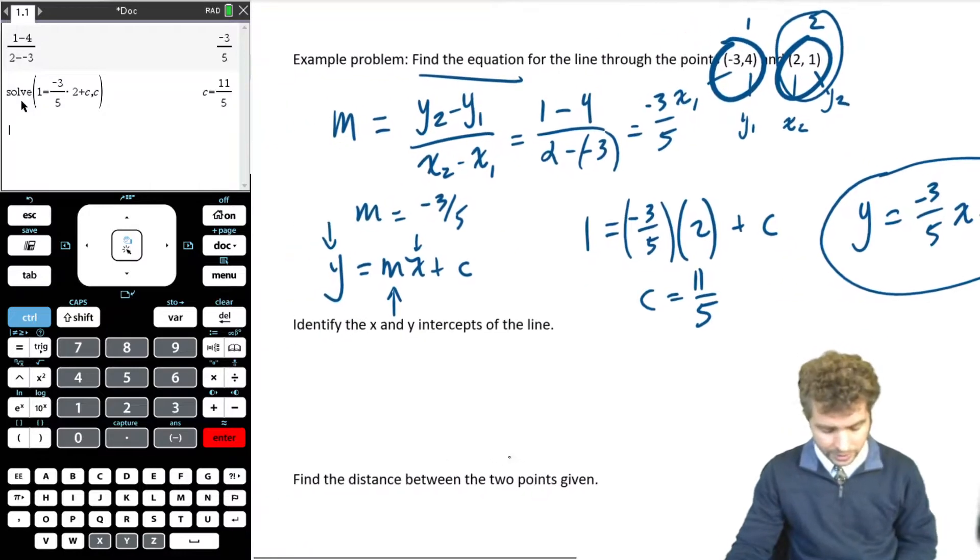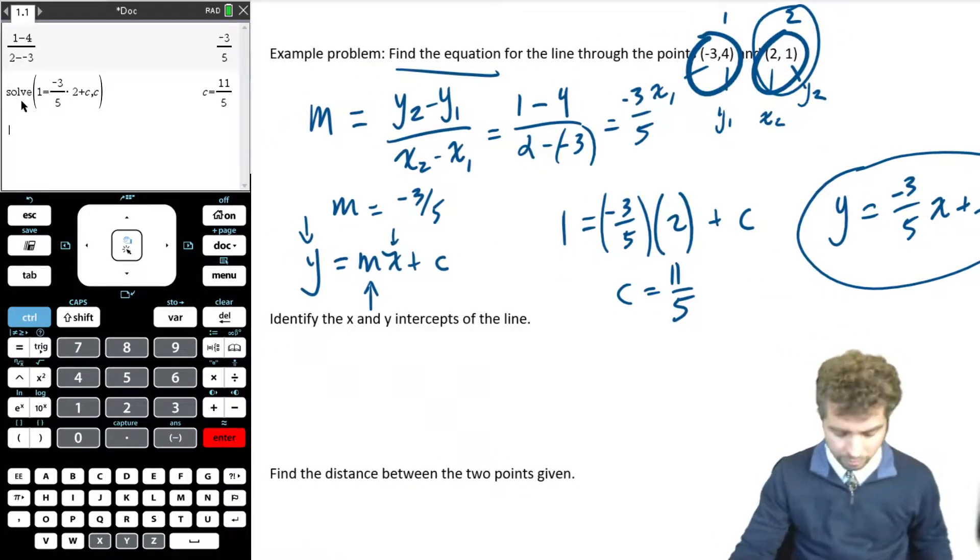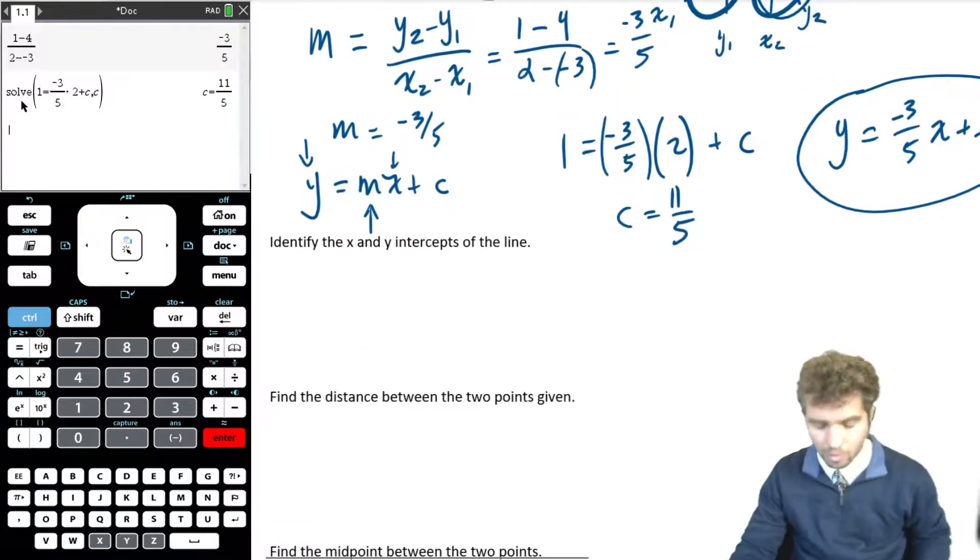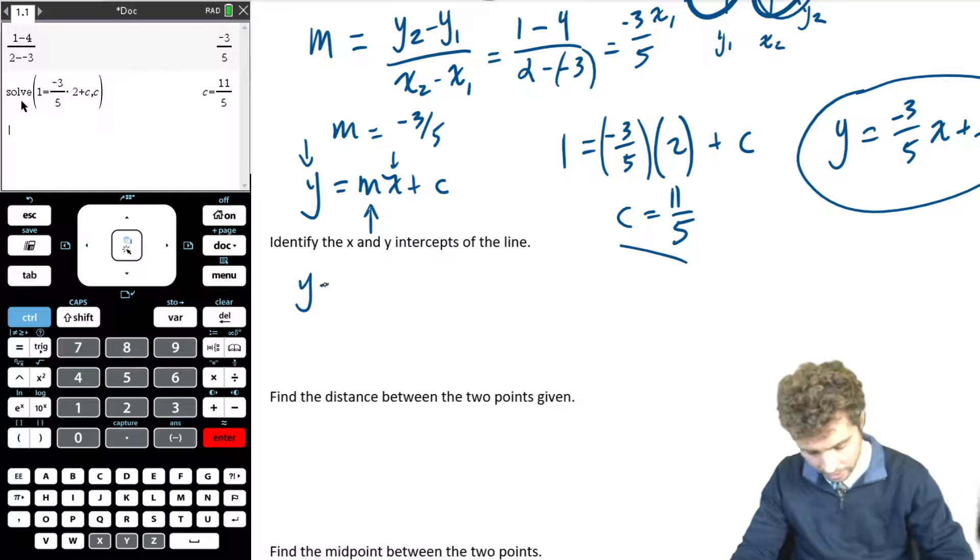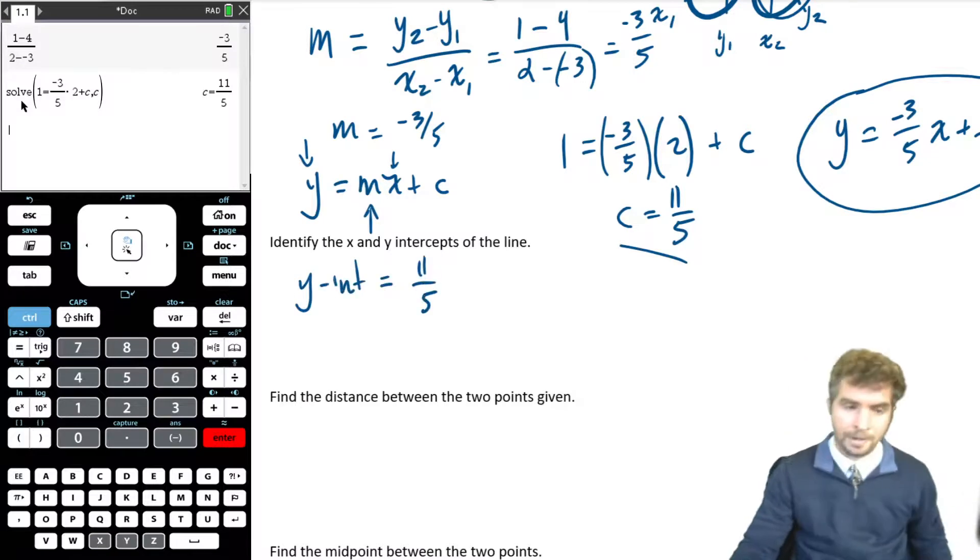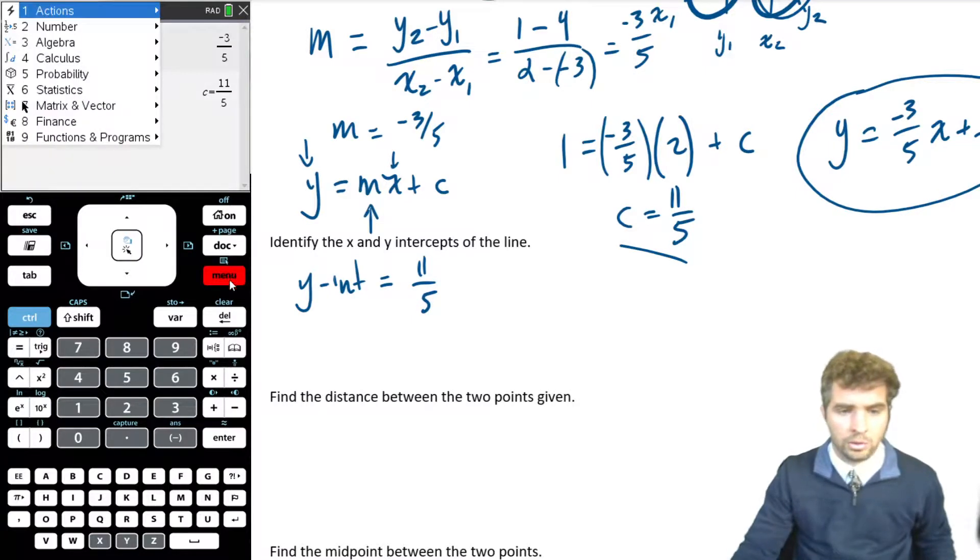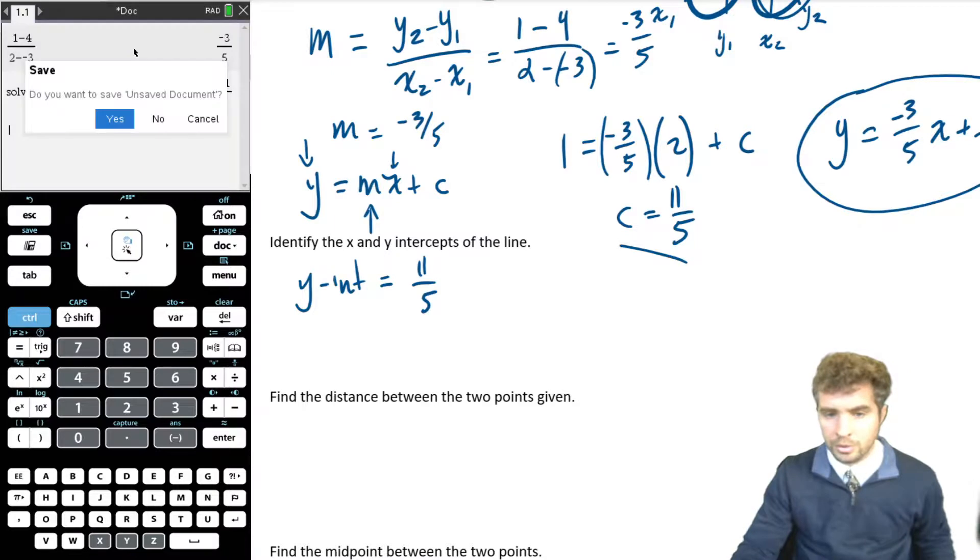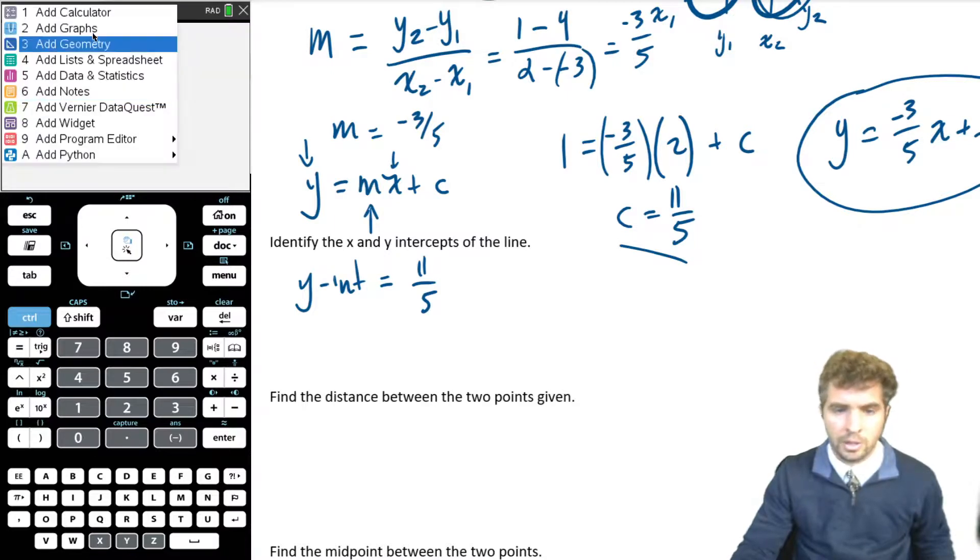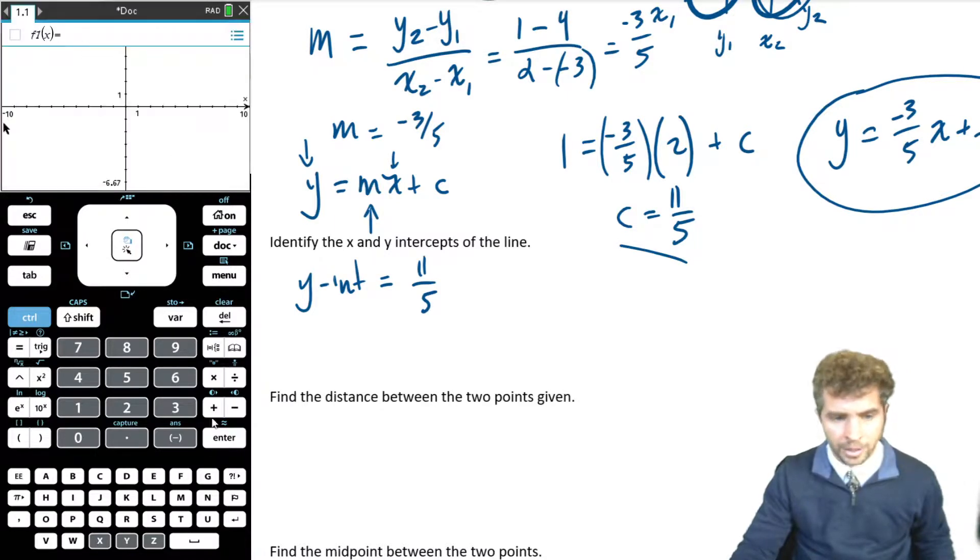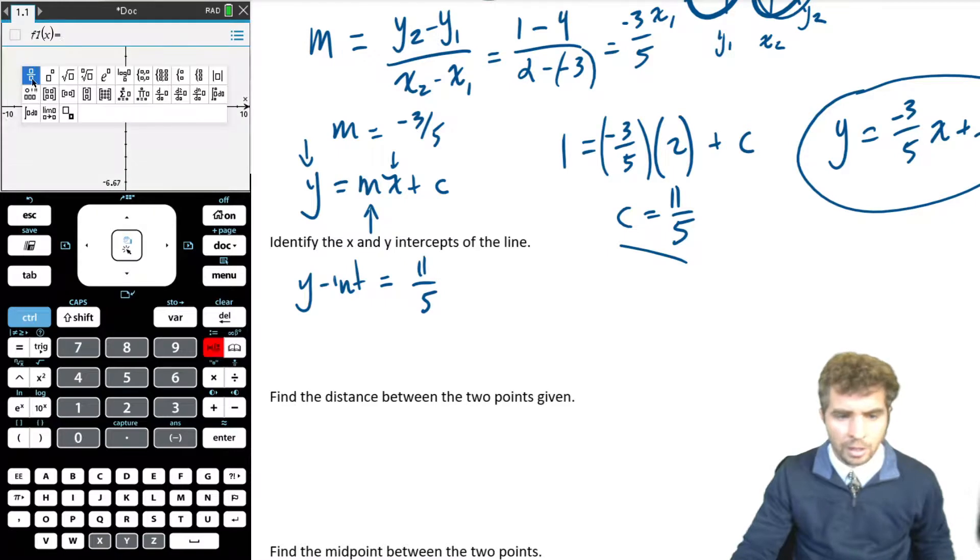Now it says, identify the x and y intercepts of the line. Well, the y intercept we've already found, right? That was our c value. So y intercept equals 11 fifths. Okay, to find the x intercept, I'm actually going to go to a new document, not going to save, and I'm going to add a graph. And I'm going to plug my equation in. So type my equation.